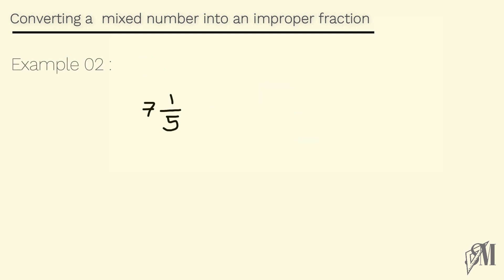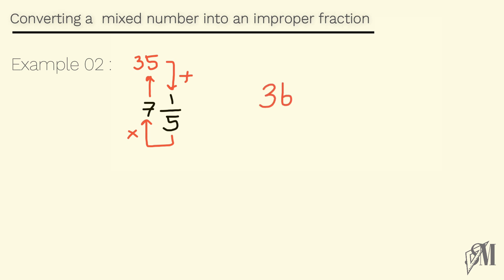Let's look at another example: 7 and 1 over 5. First, we multiply 7 by 5 — we know 7 into 5 is 35. Then to 35 we add the numerator of the mixed number, which is 1, so 35 plus 1 is 36. The denominator never changes — it is 5 — so our answer is 36 over 5.